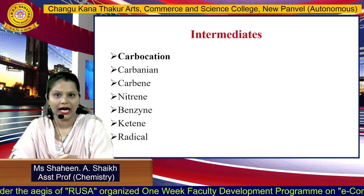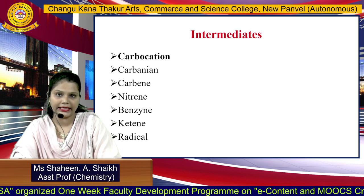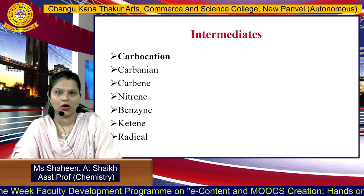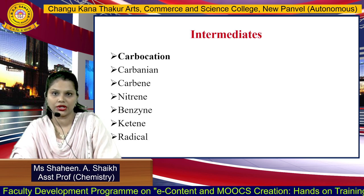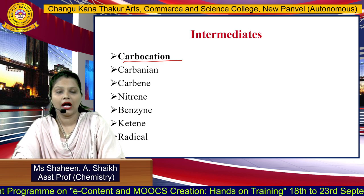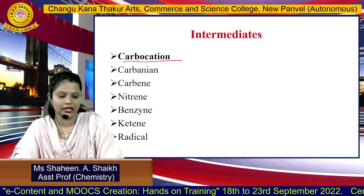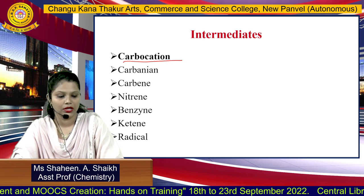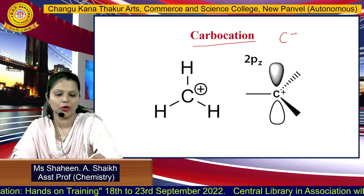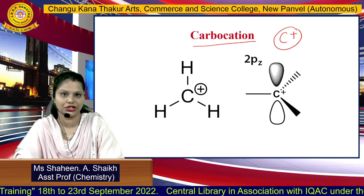There are many types of intermediates. Carbocation, carbanion, carbene, nitrene, benzyne, ketene, and radicals are all intermediates. In today's lecture, we will learn about carbocation — what it is, how it is generated, and what its stabilities are. What is a carbocation? When carbon carries a positive charge, it is known as a carbocation. This is the basic definition.